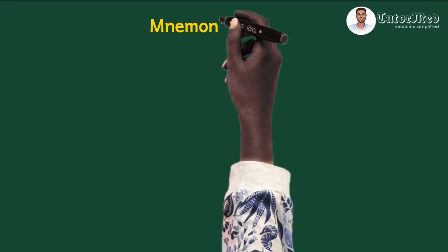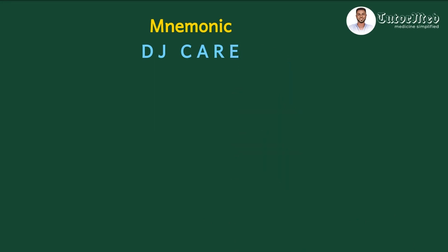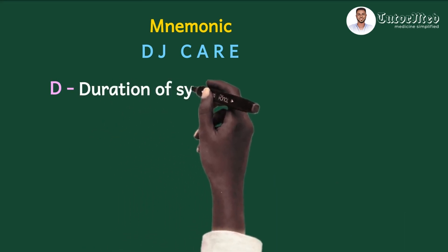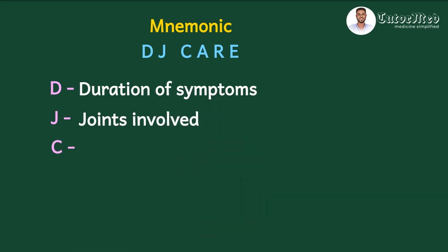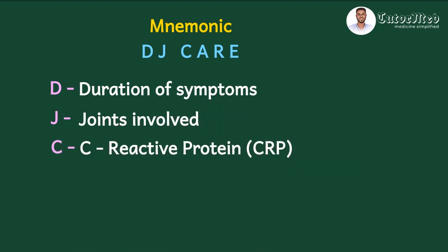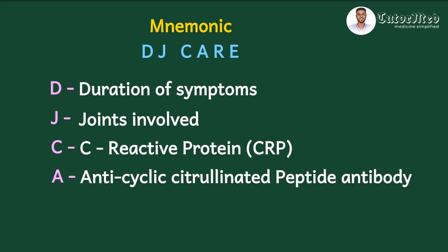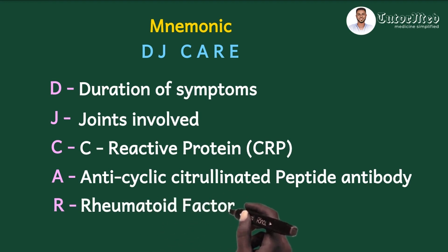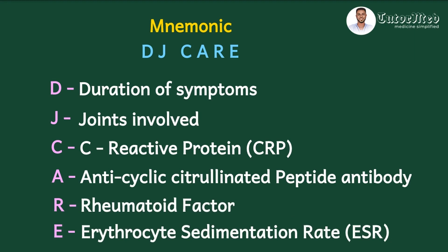Let's create a mnemonic for these parameters, because that is what the MCQ was looking for. Our mnemonic is DJ CARE. D for duration of symptoms, J for joints involved, C for C-reactive protein (CRP), A for anti-cyclic citrullinated peptide antibody (anti-CCP), R for rheumatoid factor, and E for ESR.